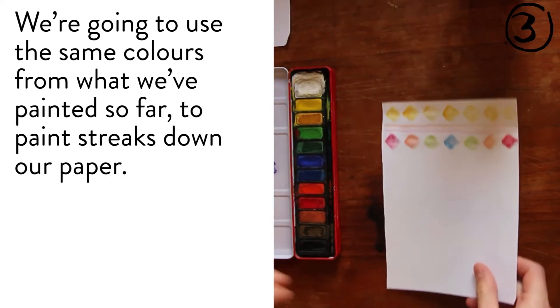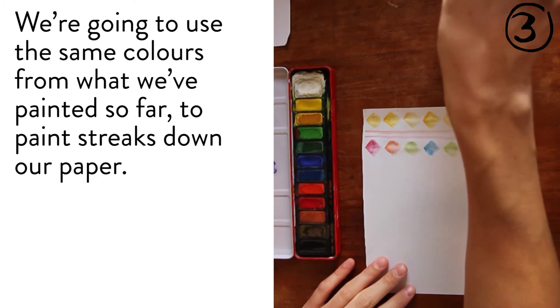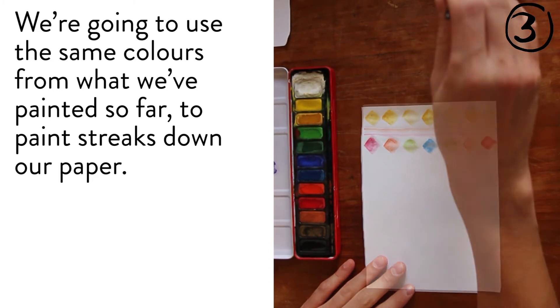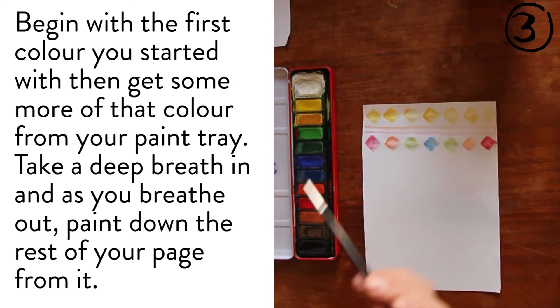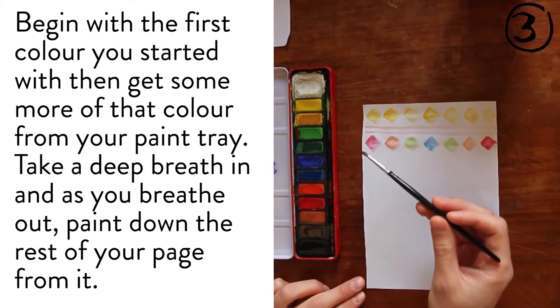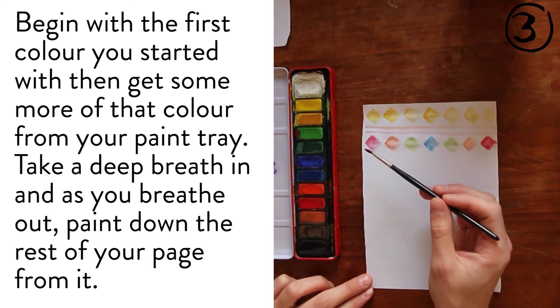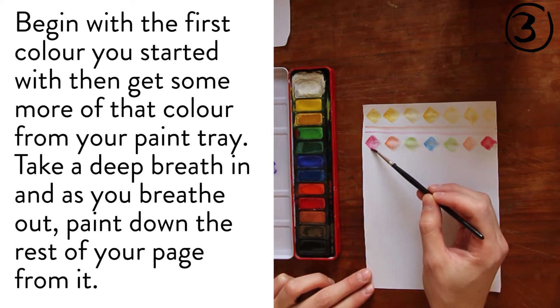We're going to use the same colors from what we've painted so far to paint streaks down our paper. Begin with the first color you started with, then get some more of that color from your paint tray. Take a deep breath in, and as you breathe out, paint down the rest of your page.